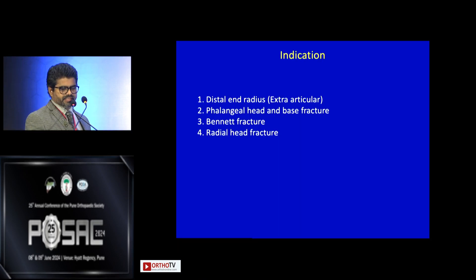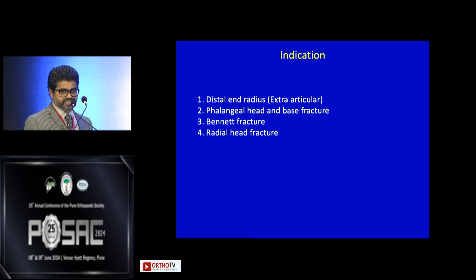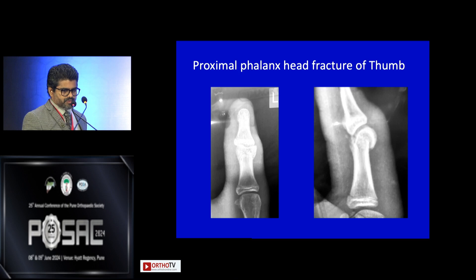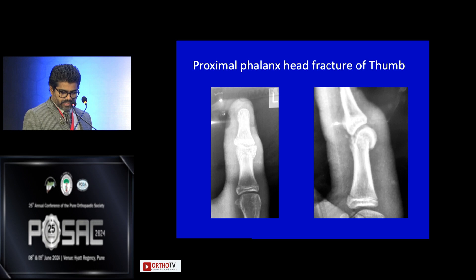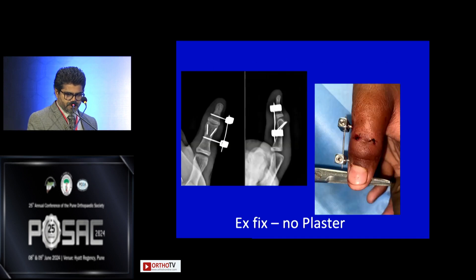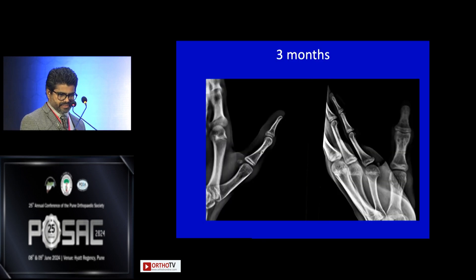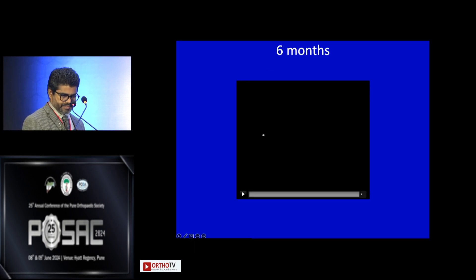I have extended the indication from distal radius to phalangeal head and base fractures, Bennett's fracture, and radial head fracture. Case number one: a 13-year-old professional cricketer with a cricket ball injury showing a proximal phalanx head fracture of the thumb, which is very difficult to close reduce. We performed a Kapanji K-wire augmented with an external fixator — no plaster required. The three-month and six-month results are excellent.